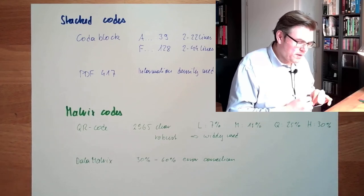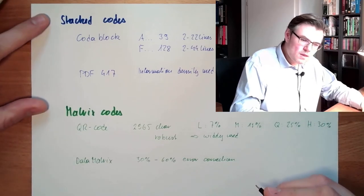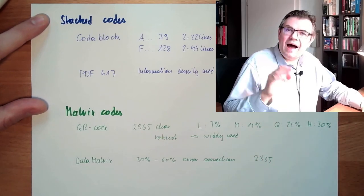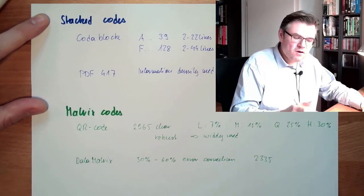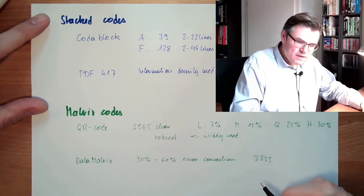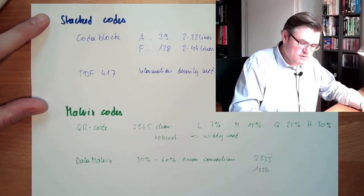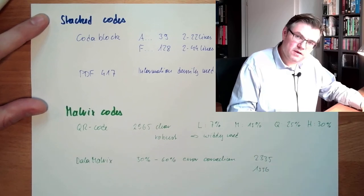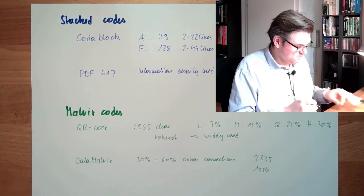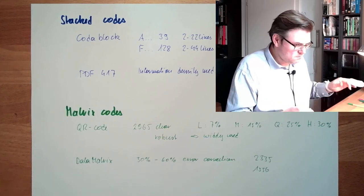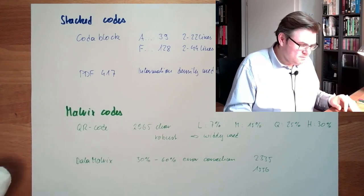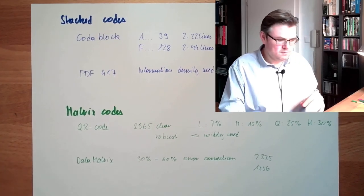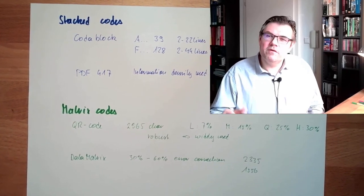Here we can code up to 2,335 ASCII characters with 7 bits, or if you want to have it in bytes, it's 1,556 8-bit bytes. This is for 7-bit characters. Here we can do decodes with more information available.